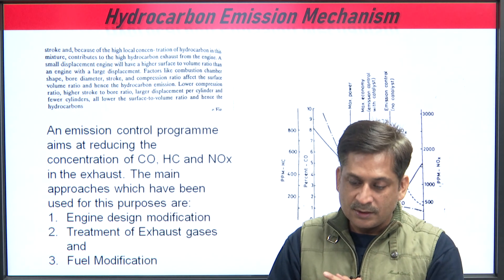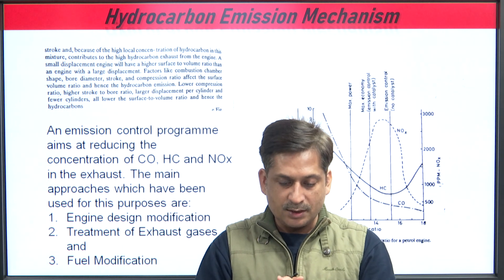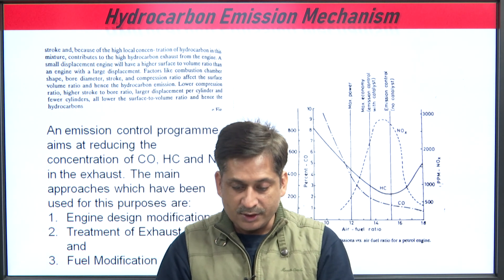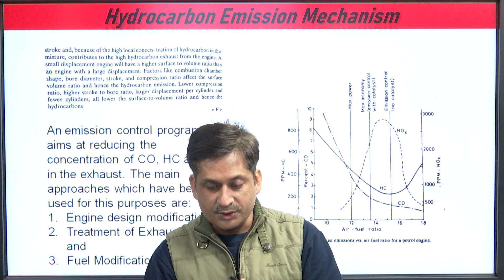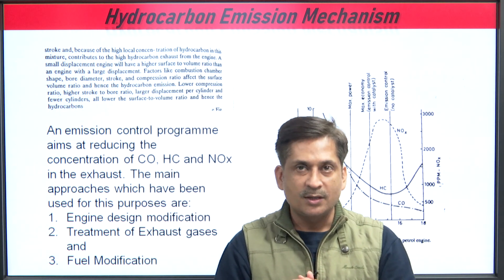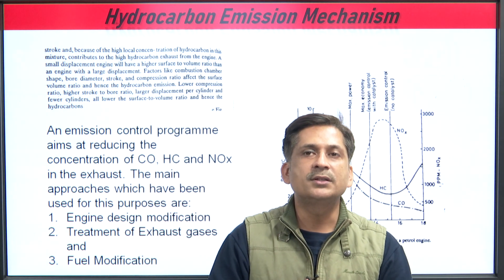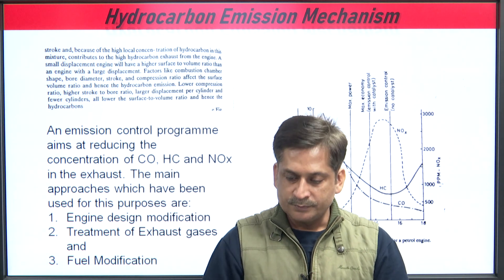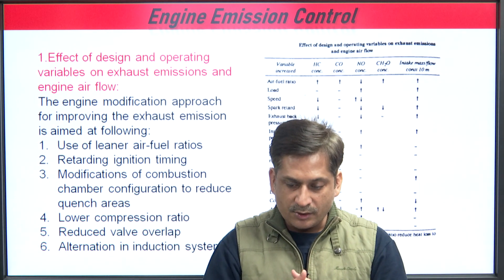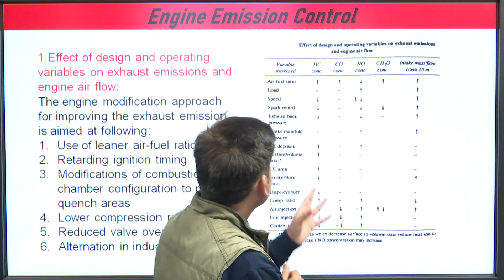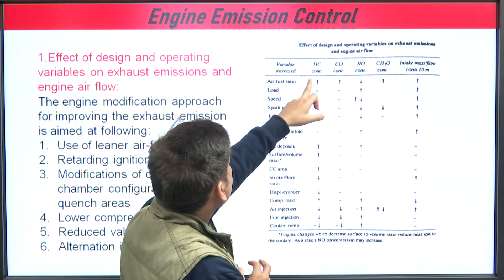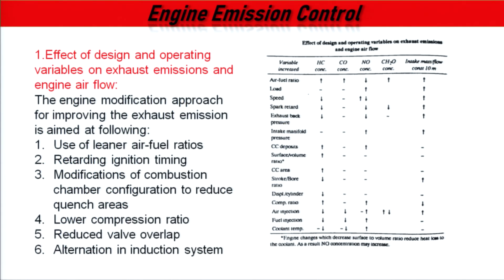These design parameters are the remedy for hydrocarbon emissions. The diagram shows the variation of different emissions with respect to air-fuel ratio, which is one of the major parameters to control emissions. Increasing air-fuel ratio increases hydrocarbon concentration, carbon monoxide concentration, and NOx — some of these are regulated and some unregulated.